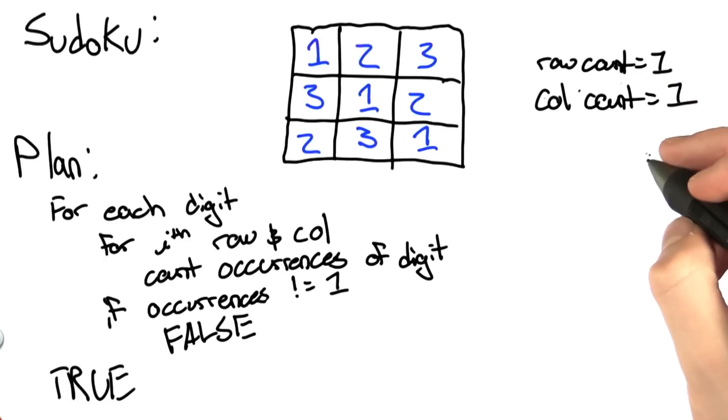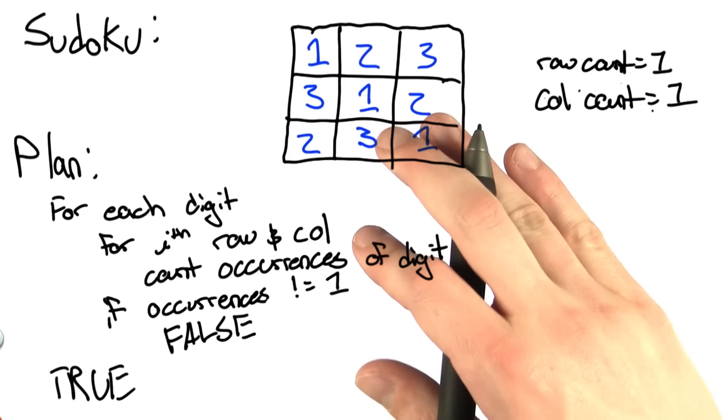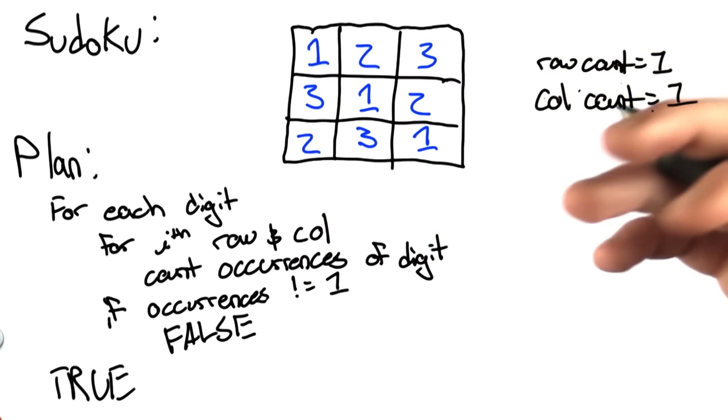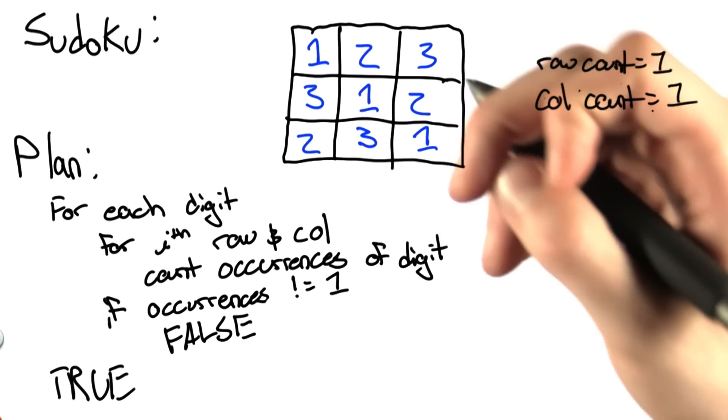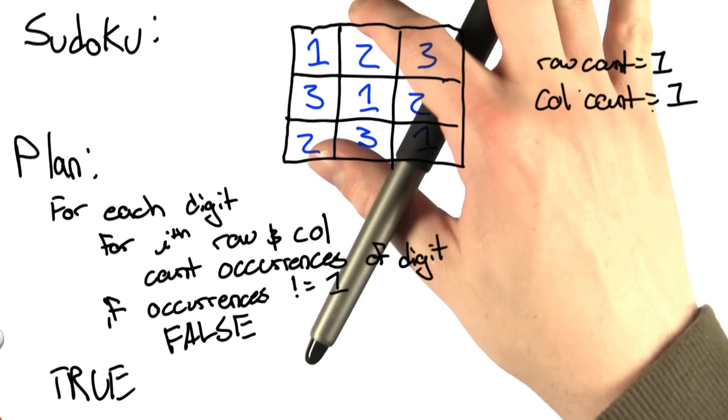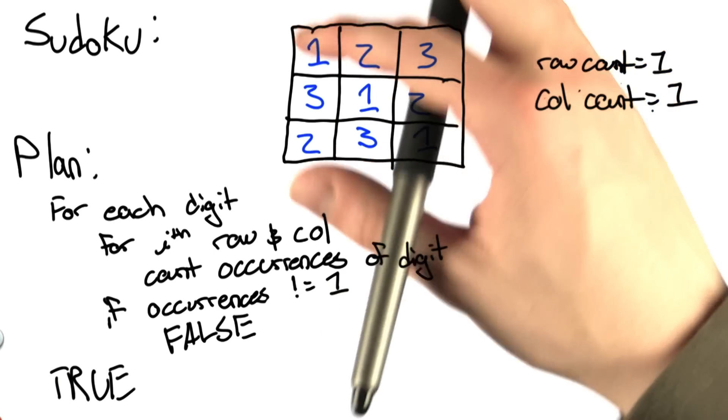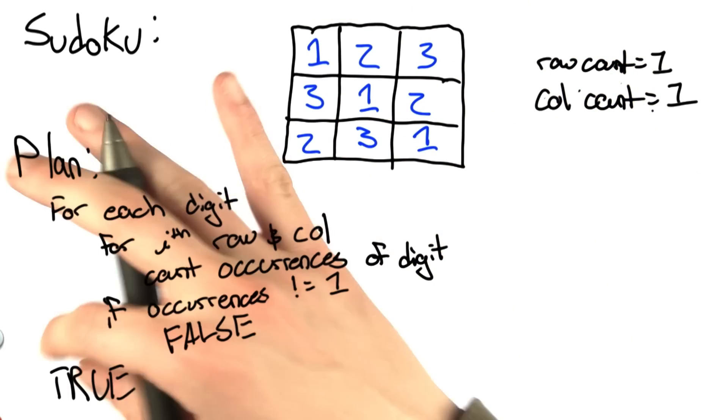If either one is not equal to 1, then this grid is not correct. Otherwise, if we go through each digit and see that every digit appears once and only once in every row and column, then this grid satisfies our modified Sudoku property, and we return true.